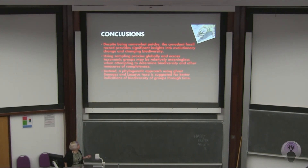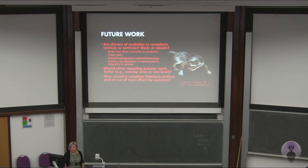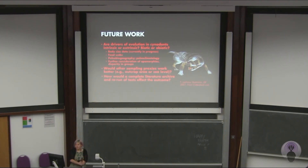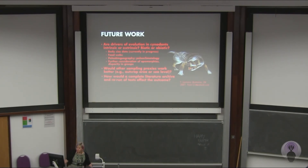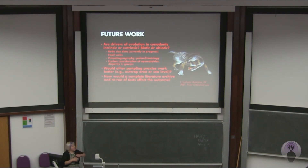I think that phylogenetic approaches are actually better in terms of considering how diverse a group is, in terms of telling what's missing, and also addressing things like food webs and other ecological questions like niche partitioning. I'm also interested in whether the drivers of their evolution are intrinsic or extrinsic, biotic or abiotic, and there are a lot of other questions that can be considered — paleoclimatic drivers, paleobiogeography, and questions of whether other sampling proxies would work better. Sea level is another common proxy, but it wouldn't really make much sense if it correlated with a terrestrial organism.